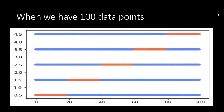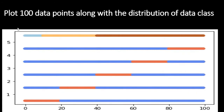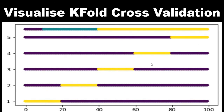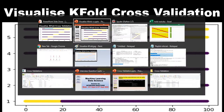Suppose if I have 100 points, this is my visualization. This is the first fold, second fold, third fold, fourth fold, and the fifth fold. At the top you can see the distribution of classes, and this is the final visualization of how it looks.